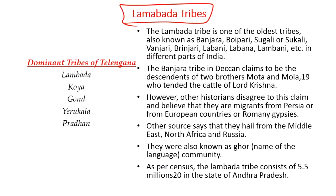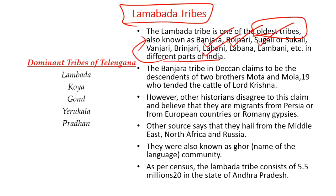The second article is about the Lambada tribes. The Lambada tribe is one of the oldest tribal groups in India, present in different parts of the country including the states of Rajasthan, Telangana, and Andhra Pradesh. In different parts of India they are known by different names, including Banjaras, Boi Paris, Sugali, Lambini, and Lambani.